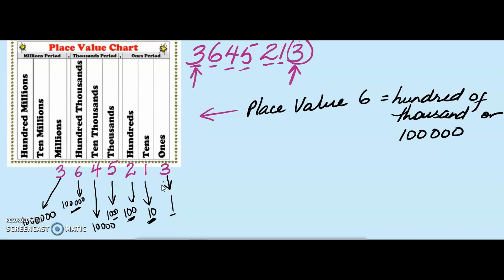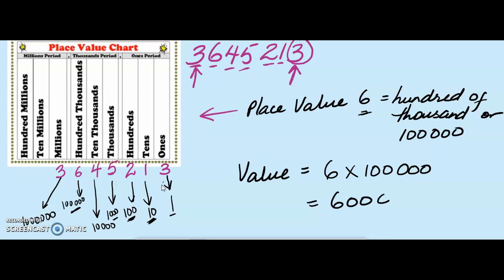Now, what is the difference between place value and value? The value of a digit is how much a digit is actually worth based on the position it is placed in the number. Let us take for example the 6. The 6 has a place value of 100 of thousands. So to determine the value of the 6, I simply multiply the digit 6 by its place value, which is 100,000, and we get 600,000.